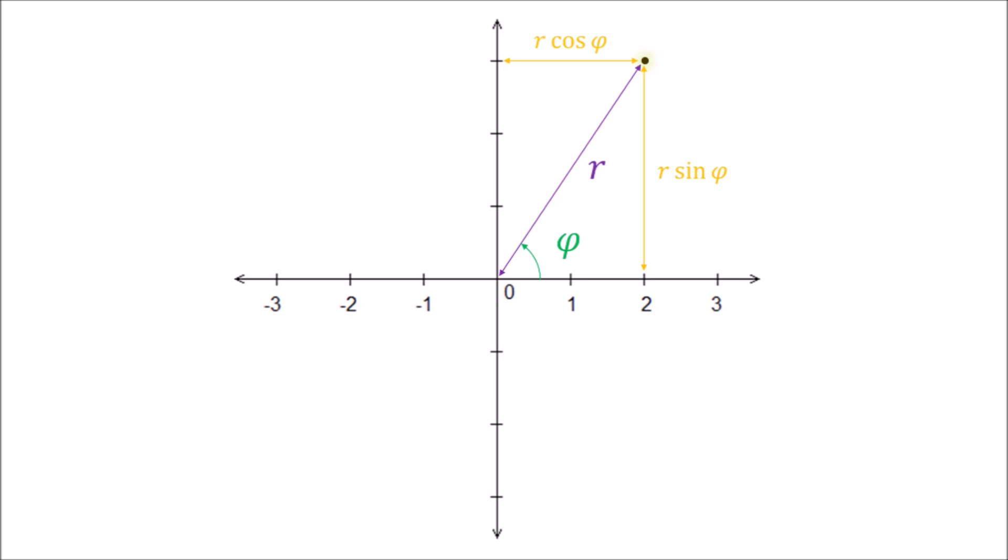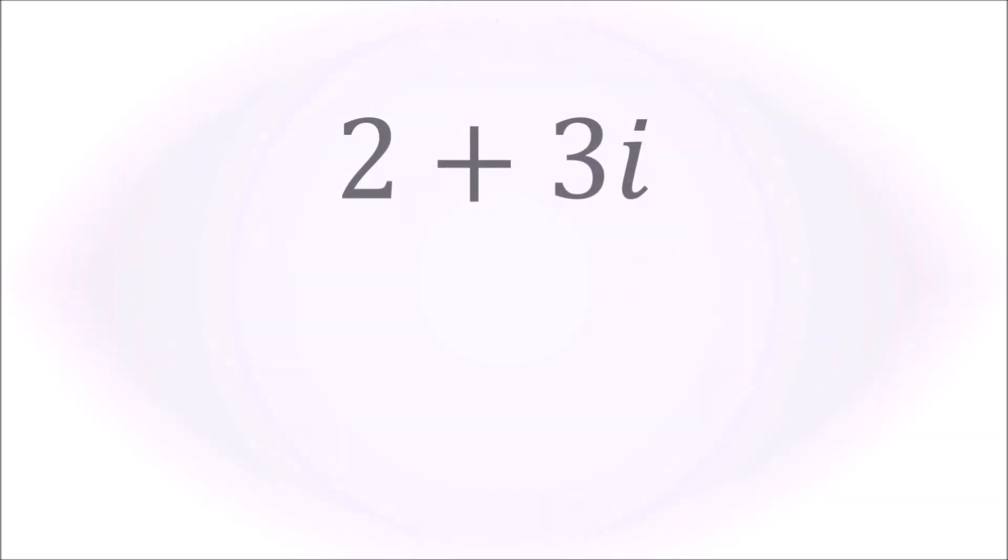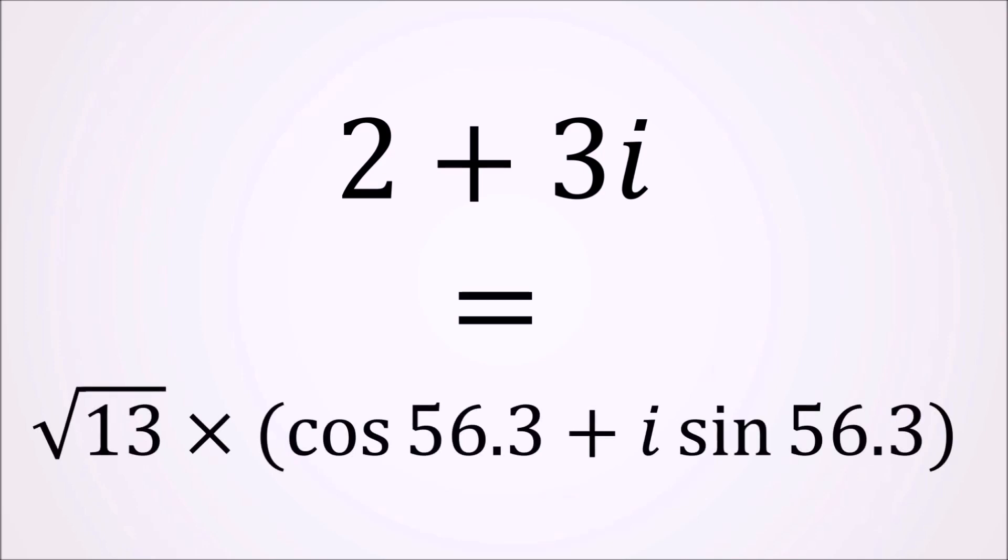And the imaginary distance of 3 is the same as square root 13 times the sine of 56.3. So 2 plus 3i is the same as square root 13 times the cosine of 56.3 plus i times the sine of 56.3.